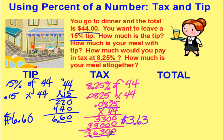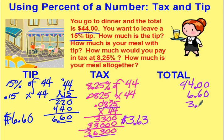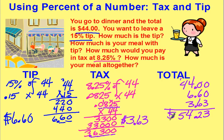Sometimes you'll have to round your tax. You would look at the number behind the pennies to decide whether to round up or down. So now we have: your meal was $44, your tip is $6.60, and your tax is $3.63. Adding down: 3, 12, carry your 1, 14, carry your 1. The total cost of this meal would be $54.23.